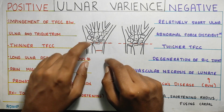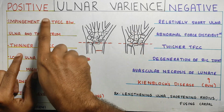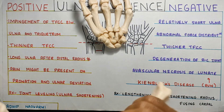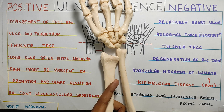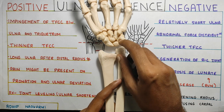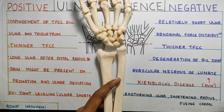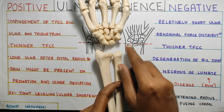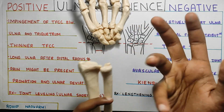When there is positive ulnar variance, the space in that region will be less, so the TFCC will be comparatively thinner. Compare this to negative ulnar variance, where the ulna is lower — the TFCC will be comparatively thicker. Simple logic: more space, so the TFCC is thicker.